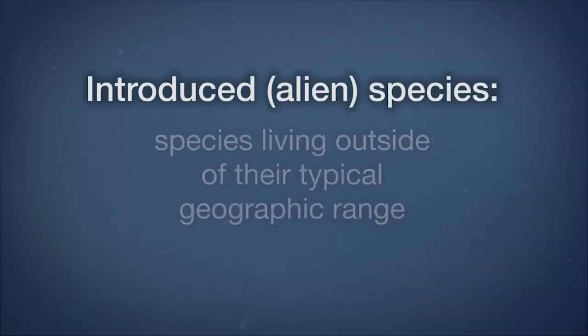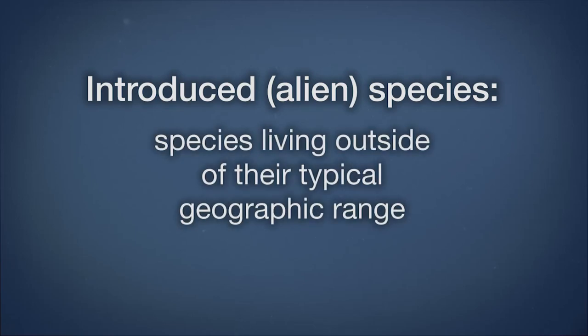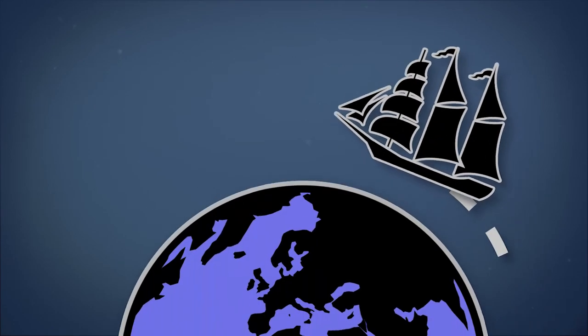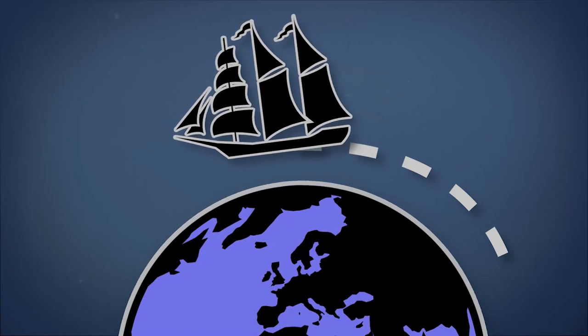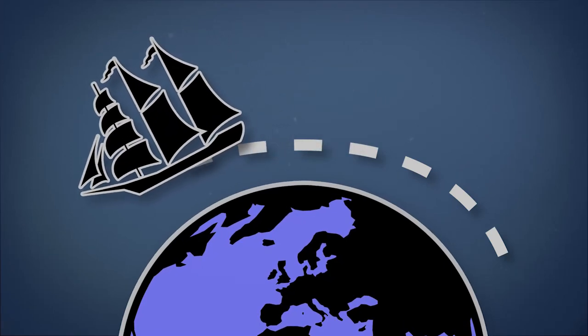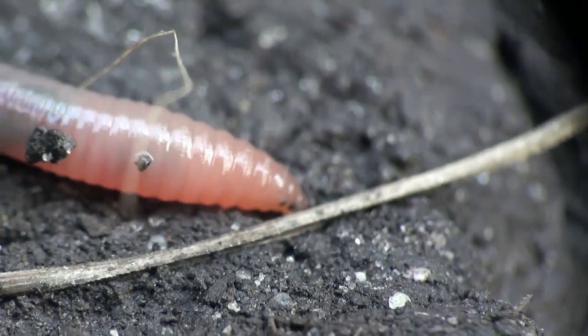One of the most important issues in environmental science is species extinction. A major reason for species extinction is the introduction of species to locations where they didn't used to be. Introduced, or alien species, is the term for those species living outside of their typical geographic range. The global travel by people and goods is the primary cause of species being introduced to new locations. Here are some examples of introduced species.